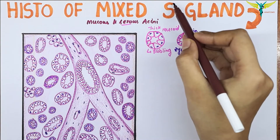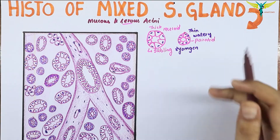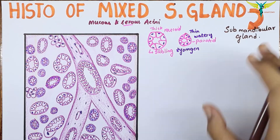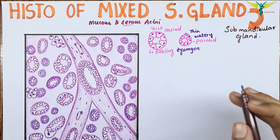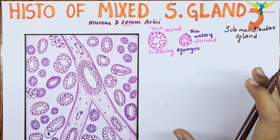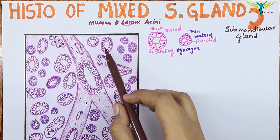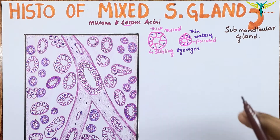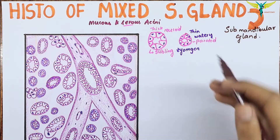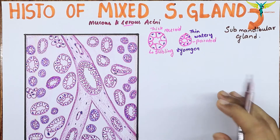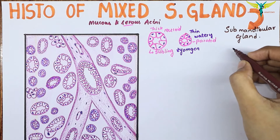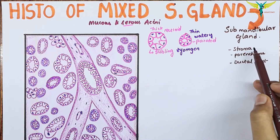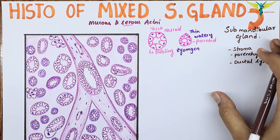The mucus acini that secrete thick mucoid secretion are mainly present in the sublingual gland. The submandibular gland is the mixed type of salivary gland because it has a presence of both mucus and serous acini. Basically, the structure of a salivary gland contains a stroma, parenchyma, and a ductal system. The stroma contains a connective tissue capsule and septa.